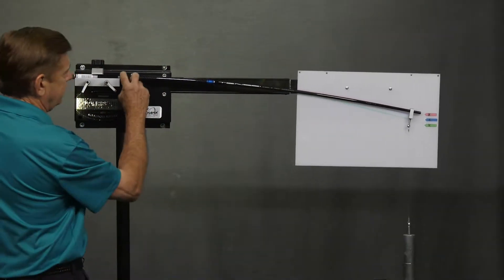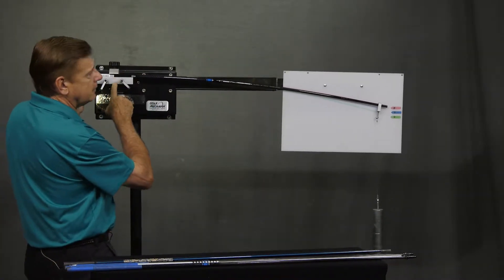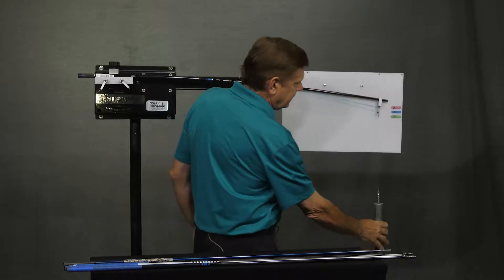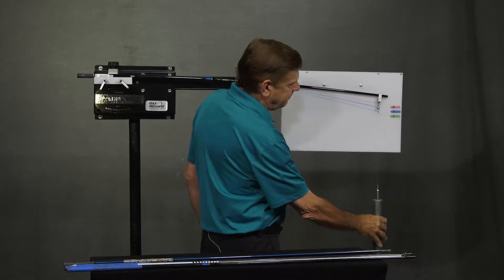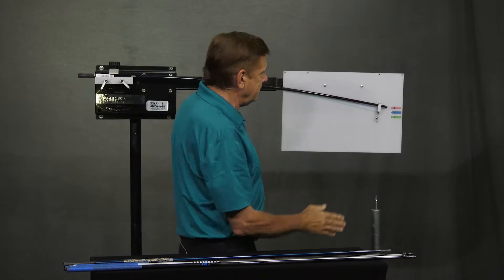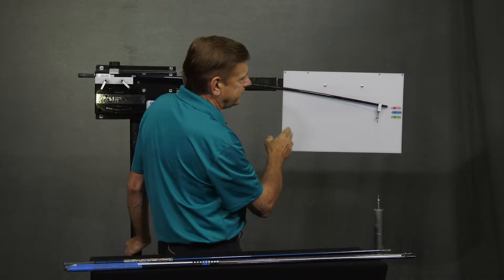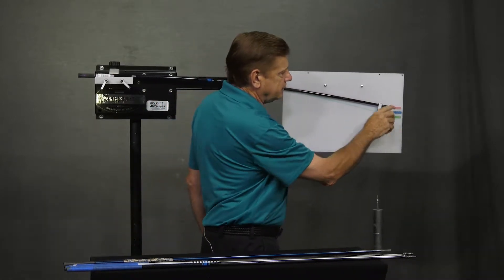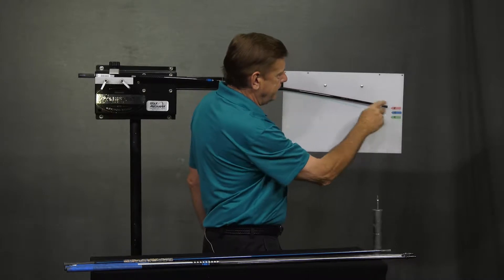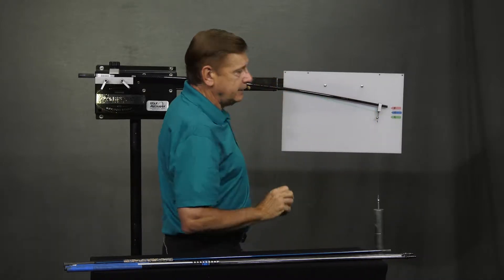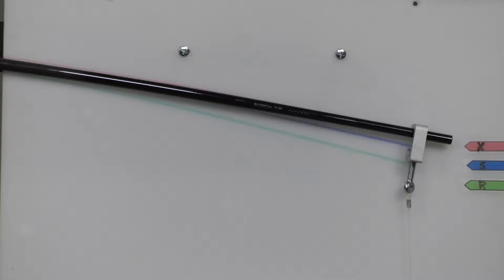The shaft is clamped at the handle here, and a weight is applied at the tip. You can see how this shaft is bending down and this happens to be an X-Flex shaft. I've marked on this board X-Flex and I've traced along here where this X-Flex shaft lies.